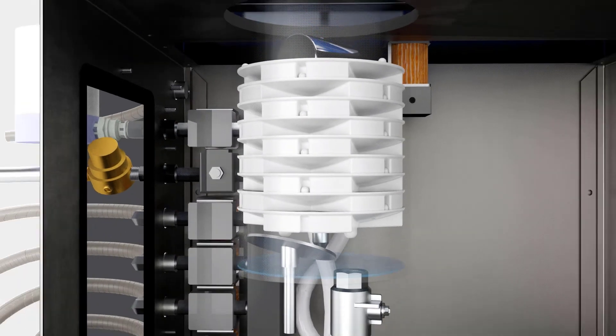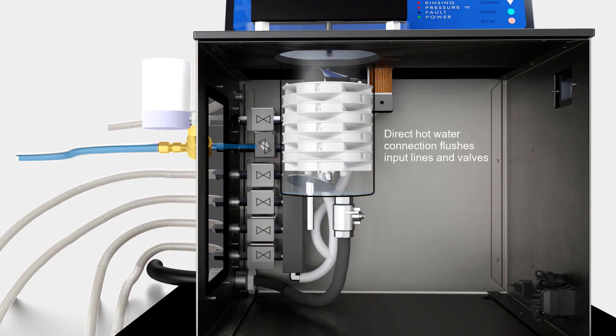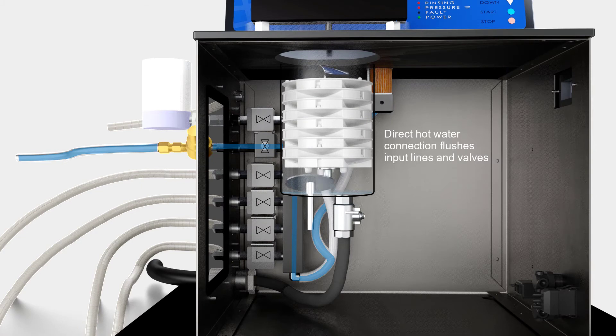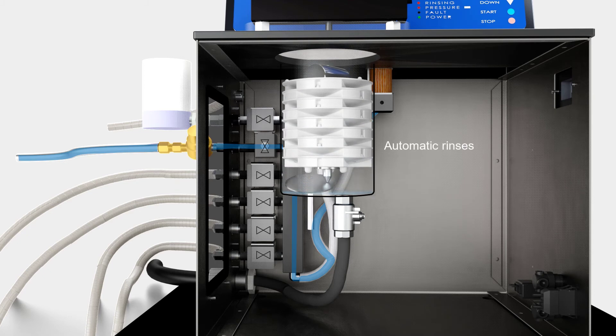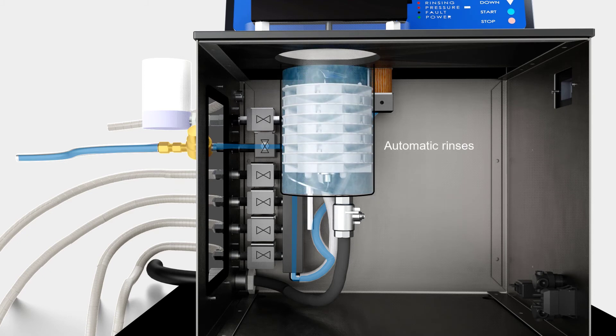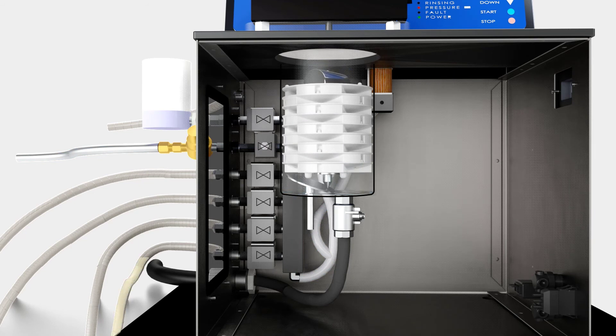A direct hot water connection allows the system to automatically flush the input lines and valves. During a crude fiber analysis, the Delta follows the acid step with a series of hot water rinses before moving to the base step.